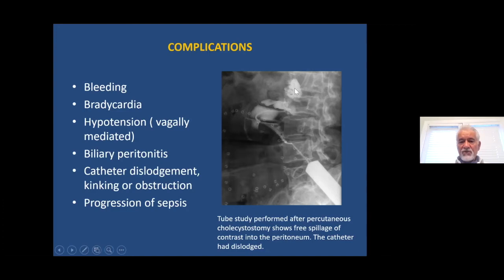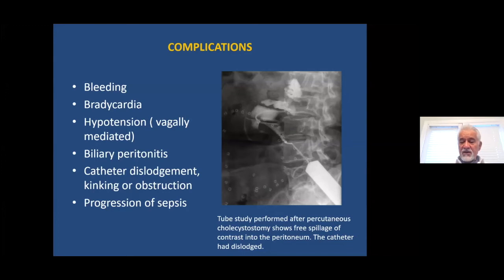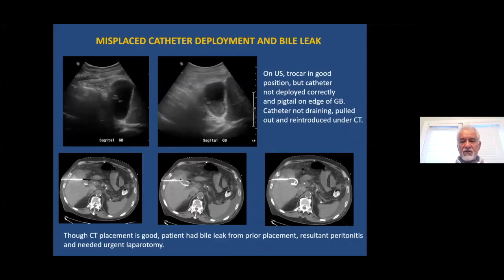Here is contrast outside of the biliary tree, in the peritoneal cavity, as a result of cholecystostomy — where the catheter has been dislodged outside of the gallbladder. Sometimes a side hole of the catheter may be outside the gallbladder, because catheters have several side holes — one at the end and many along the sides — and some may be outside the gallbladder wall while others remain inside, causing leakage of gallbladder contents.